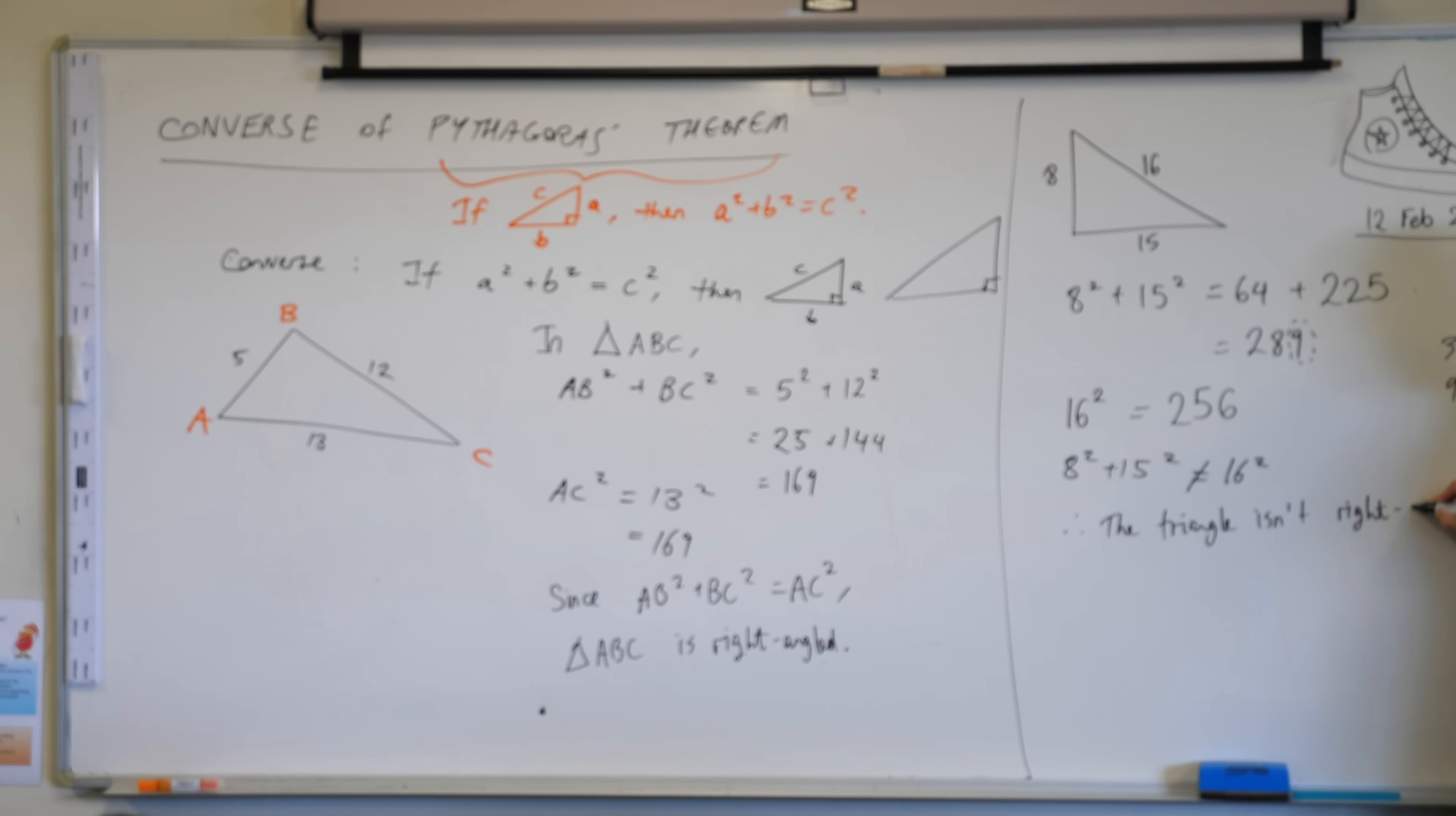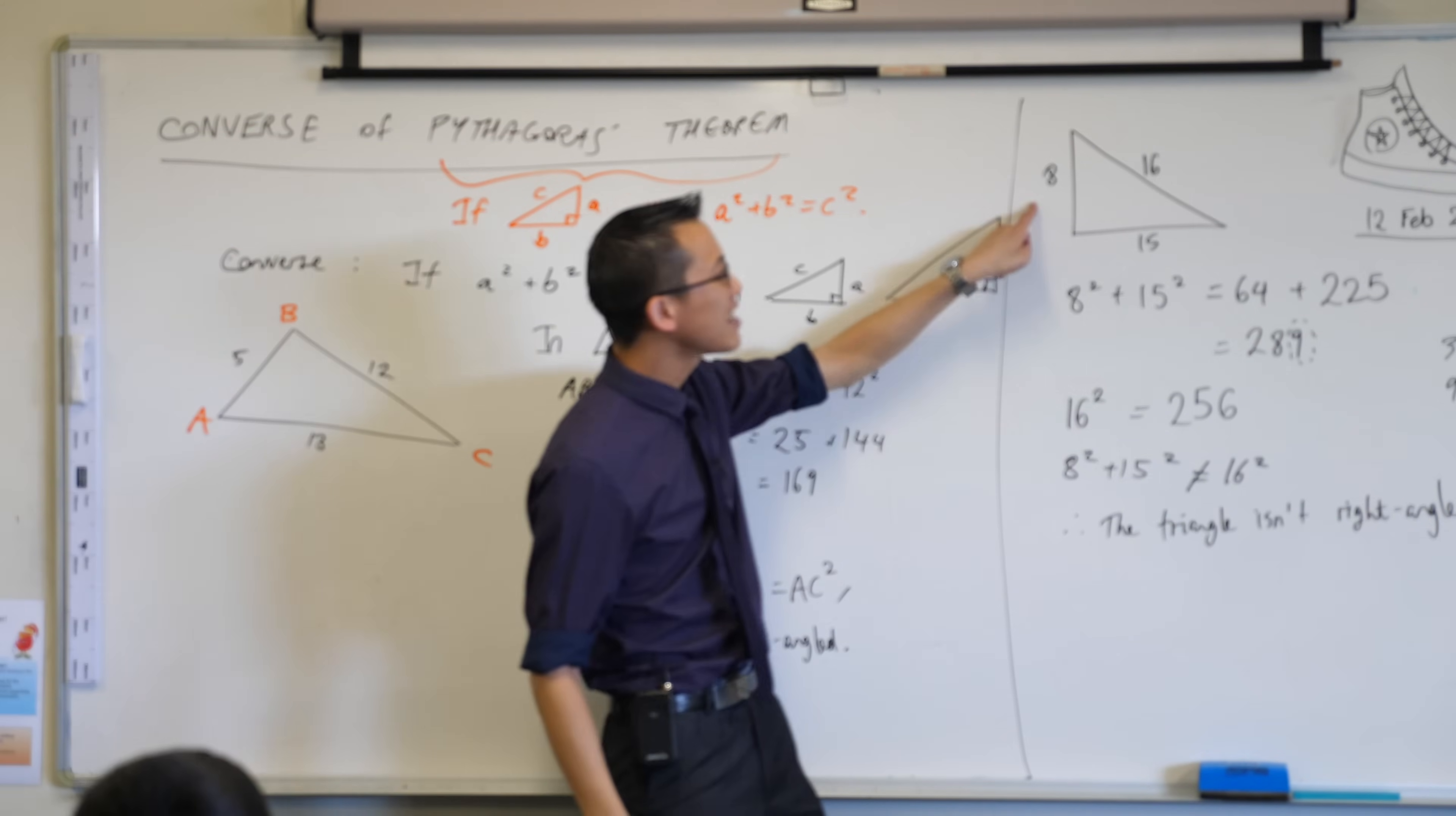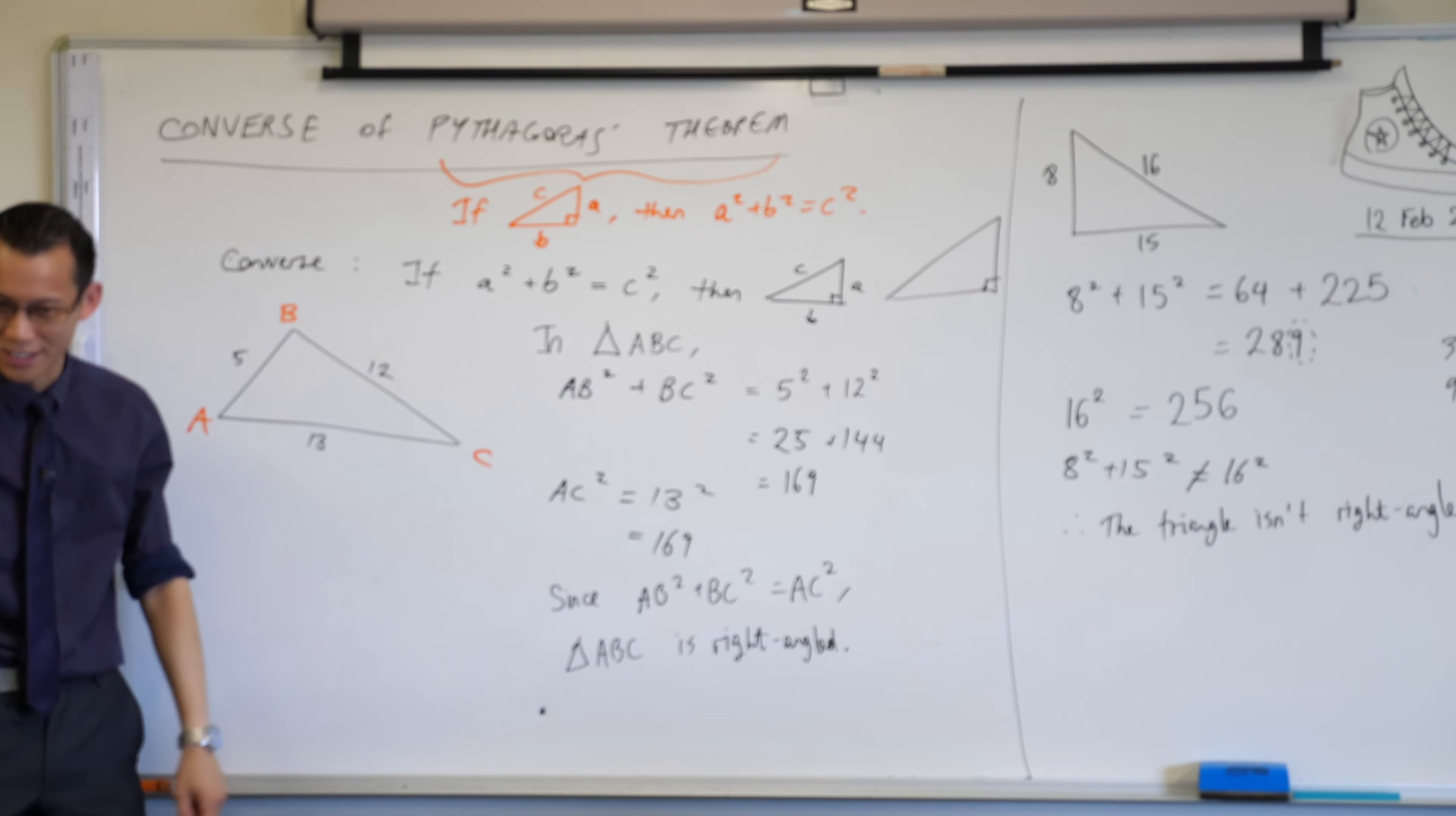By the way, 289, it actually happens to be a square number. Does anyone know what it's the square of? It's the next one, 17 squared. So we've got 5, 12, 13 here. That's a Pythagorean triad. 8, 15, 17 is another Pythagorean triad. Some of you might have actually already identified that by doing your homework, because we had asked you to find a few. But this one's a bit of an imposter. It's just a little bit off.